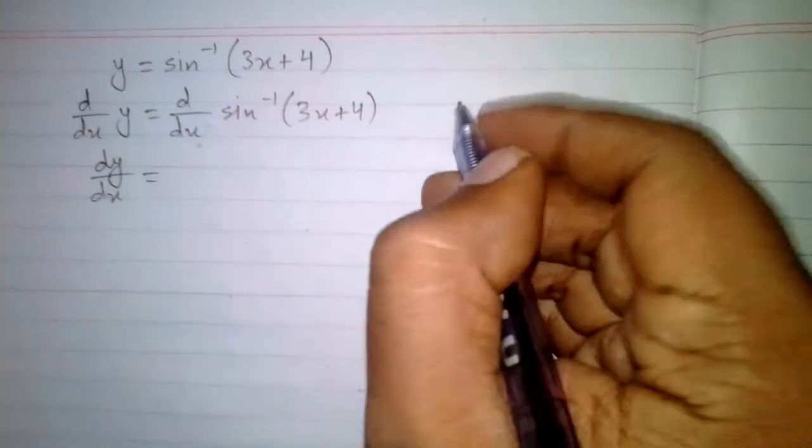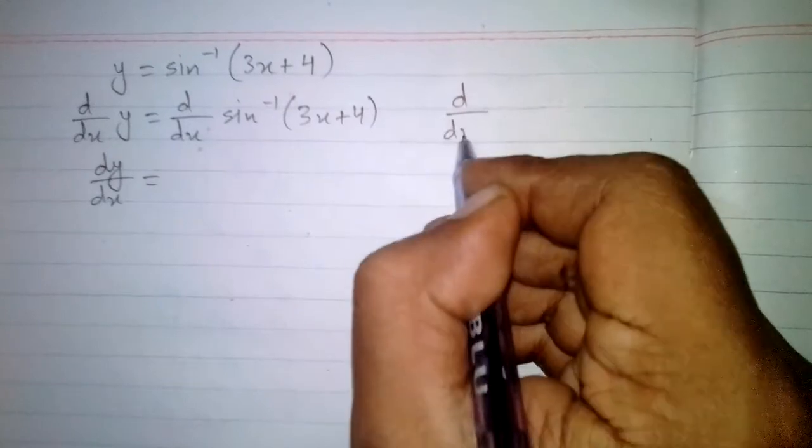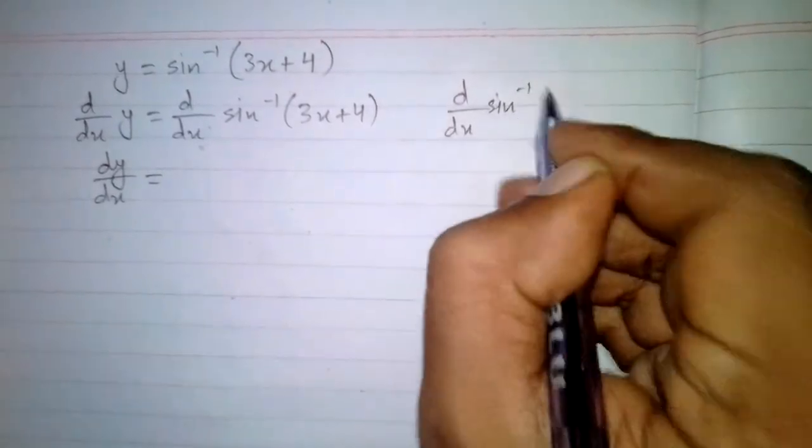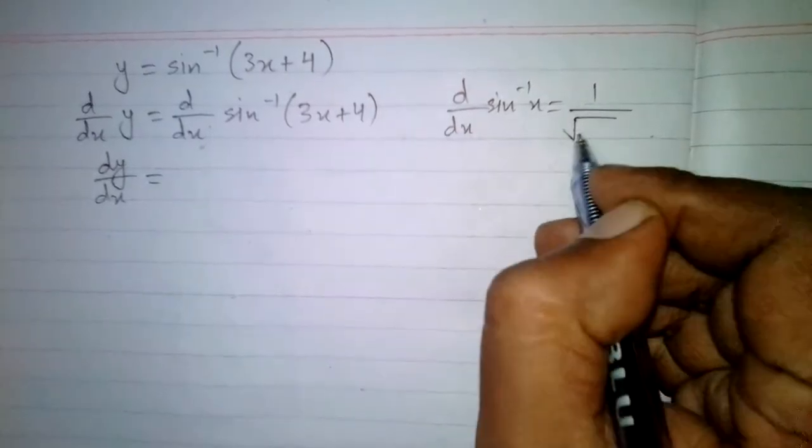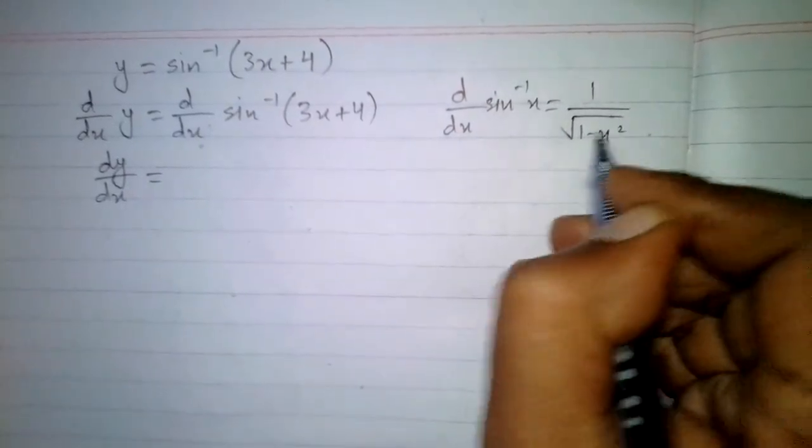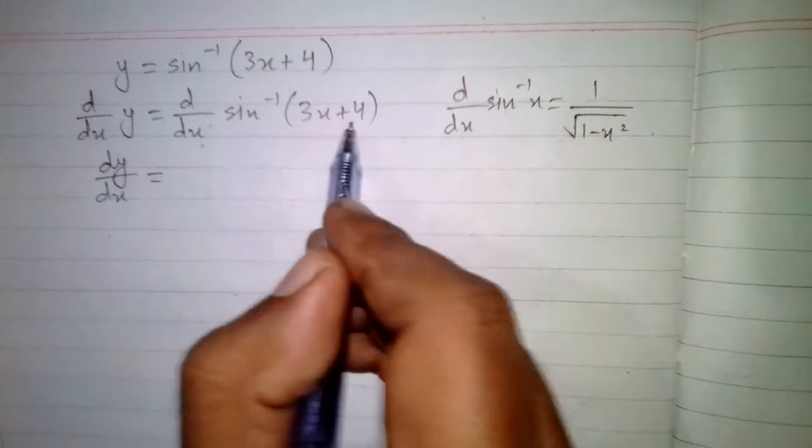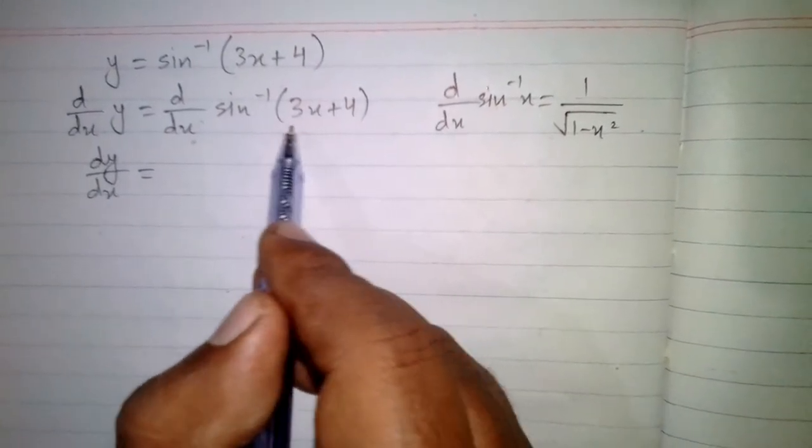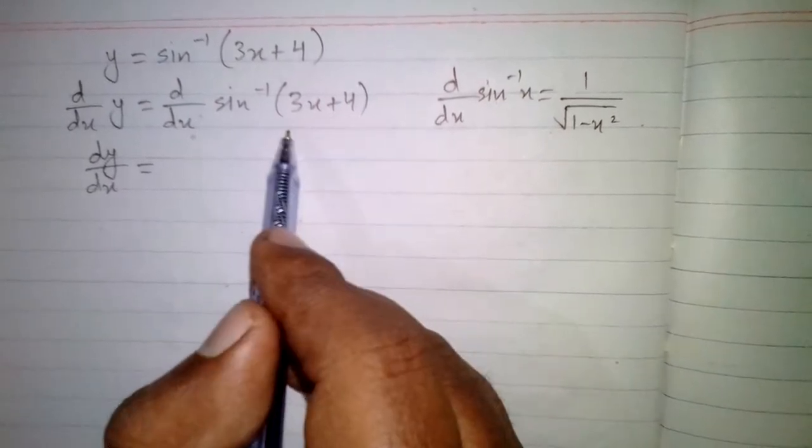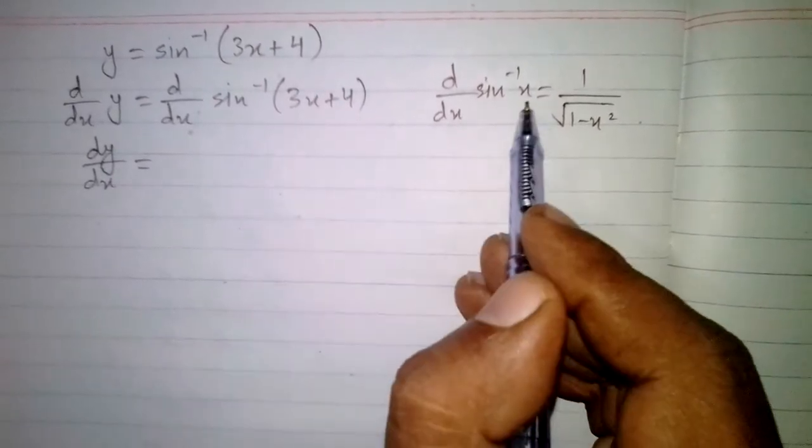The derivative of sine inverse x is 1 upon square root of 1 minus x square. So we can apply this formula but here we can see that we don't have x, we have 3x plus 4 in place of this x.